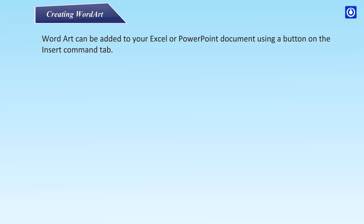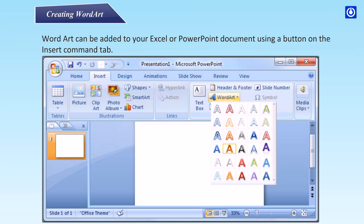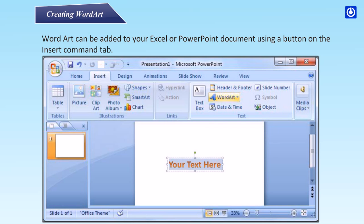Creating Word Art. Word Art can be created in your Excel or PowerPoint document using a button on the insert command tab. Step 1: In the insert command tab, in the text group, click Word Art. The Word Art gallery dialog box appears. Step 2: From the Word Art gallery, select the desired style. A Word Art text box appears in your document with the placeholder text highlighted. Step 3: Type the desired text.